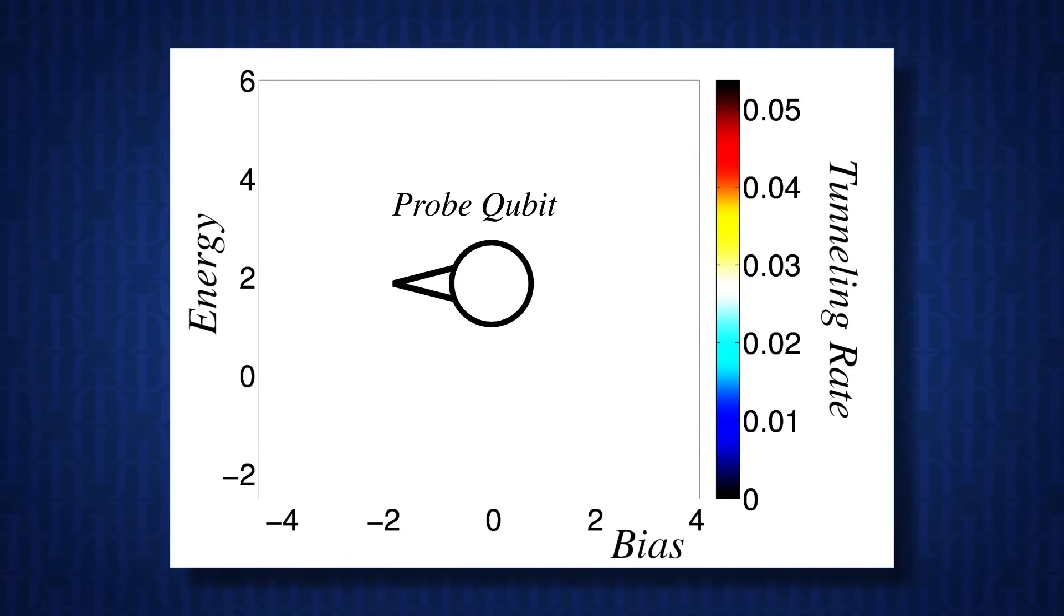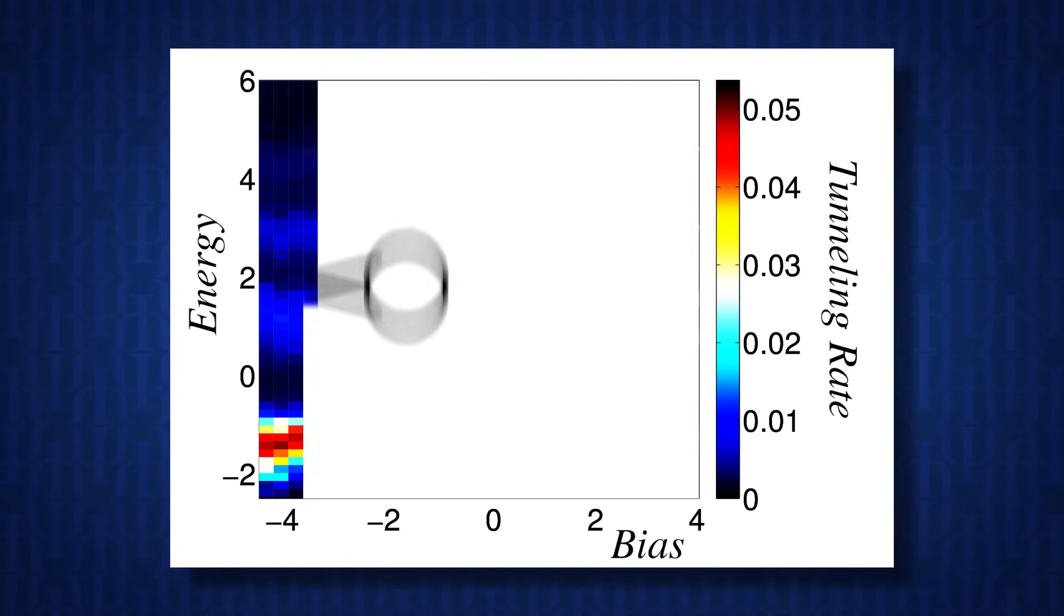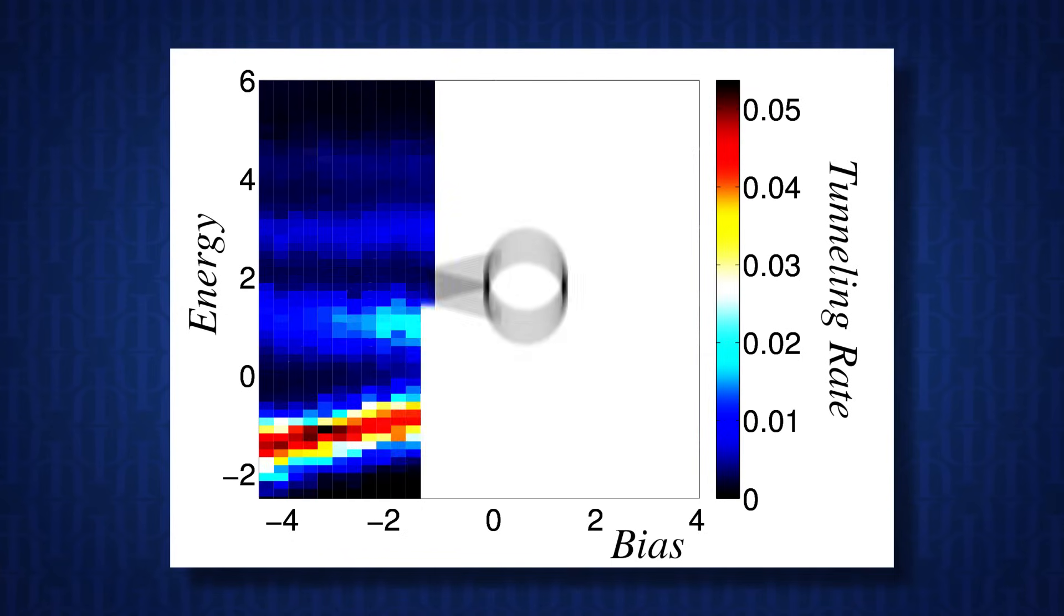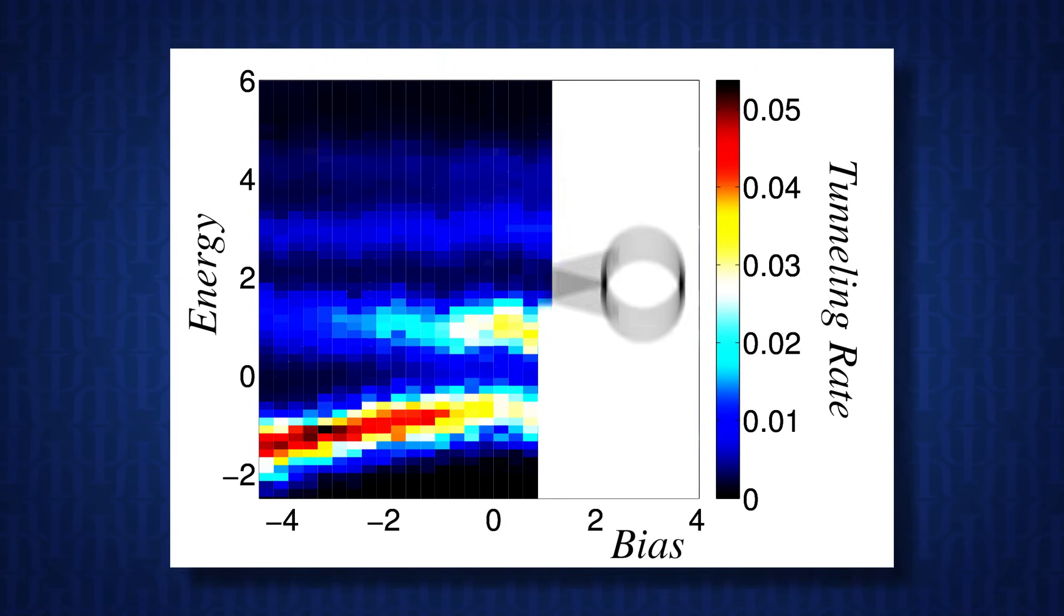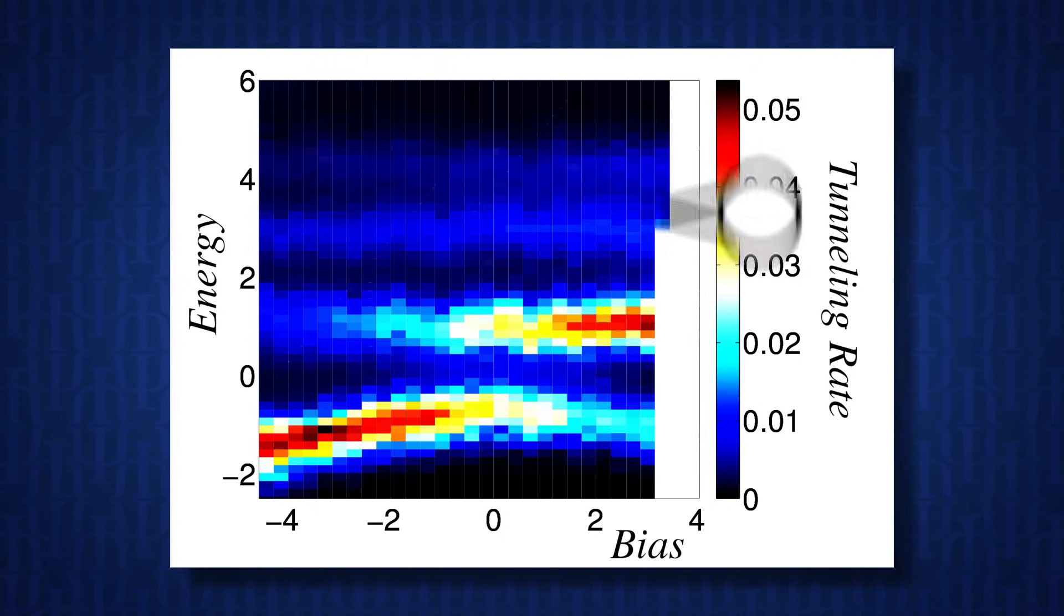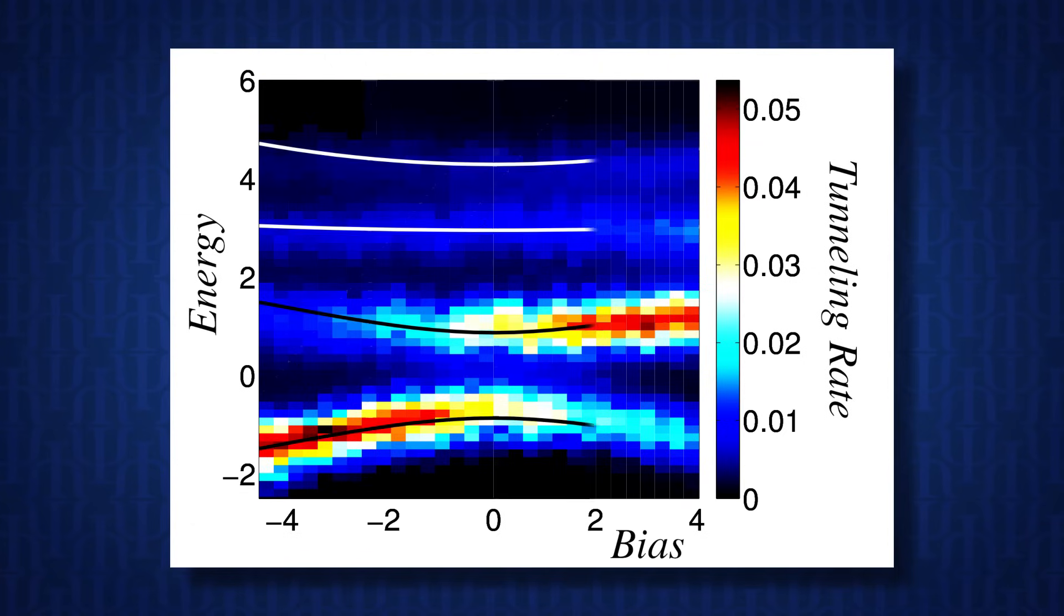So what are the results? So in the eigenspectrum, what they saw was an anticrossing, which is a signature of entanglement. And this was seen in a system of eight qubits, which is evidence of eight qubit entanglement.